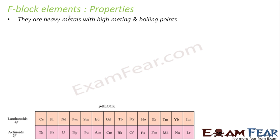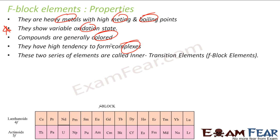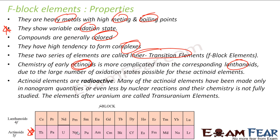Let us discuss the properties of f-block elements. They are very heavy metals with very high melting and boiling points. They also show variable oxidation state which we will learn in the next chapter. They are generally colored compounds. They have tendency to form complexes. These two series are called inner transition elements. The actinides are more complicated than lanthanides because a large number of oxidation states are possible for actinides. And these are generally radioactive actinides.